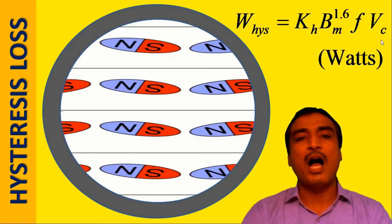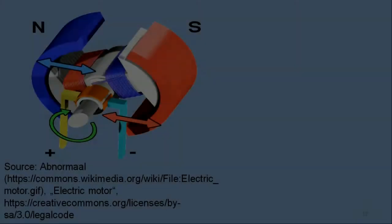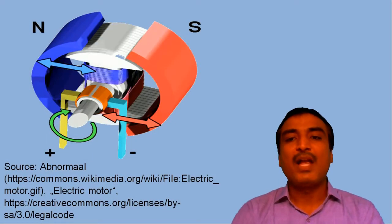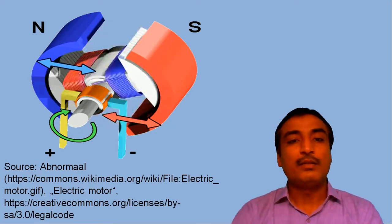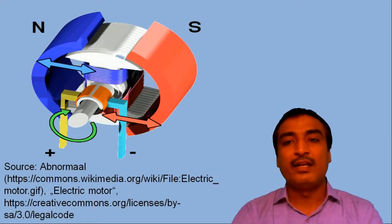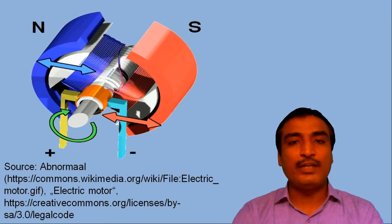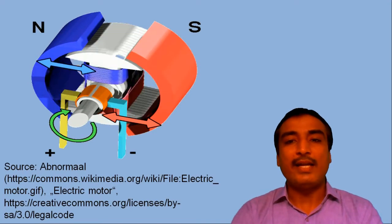Now let us see how eddy current loss occurs in the armature core of a DC machine. In reality, when the armature rotates in the magnetic field, an EMF is induced in the armature core as well, in the same way as EMF is induced in the armature conductors. Therefore, the EMF induced in the armature core generates a circulating current in the material of the armature core. These circulating currents are termed as eddy currents, and they necessarily cause a power loss in the resistance of the armature core, called eddy current loss.